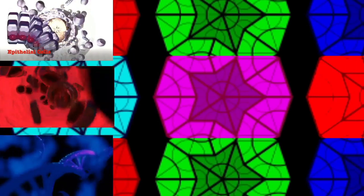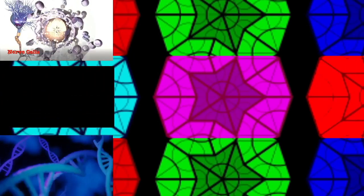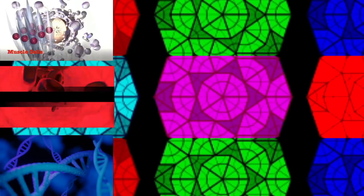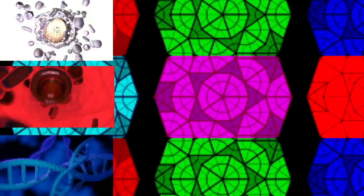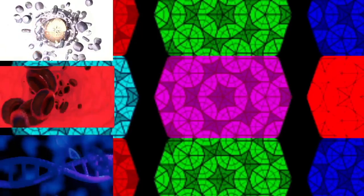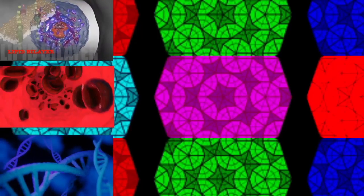The different stages of mitosis all together define the mitotic phase of an animal cell cycle, the division of the mother cell into two daughter cells genetically identical to each other. The process of mitosis is divided into stages corresponding to the completion of one set of activities and the start of the next.